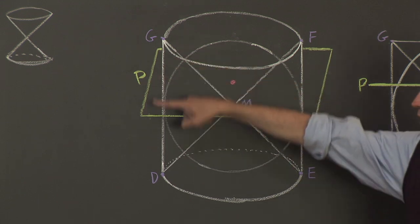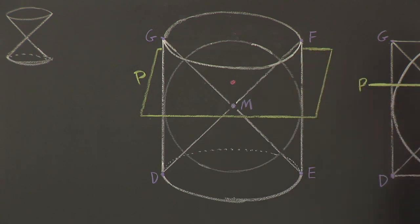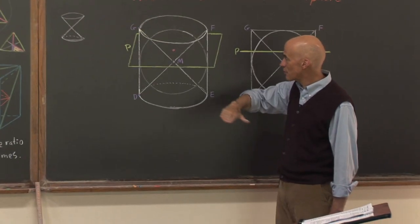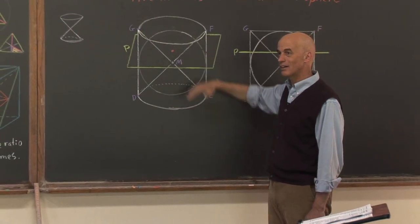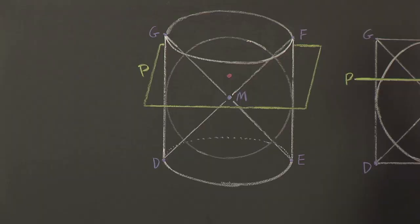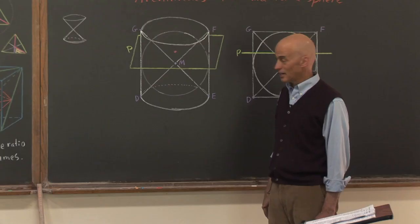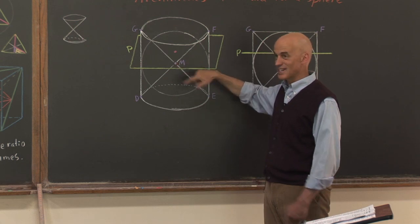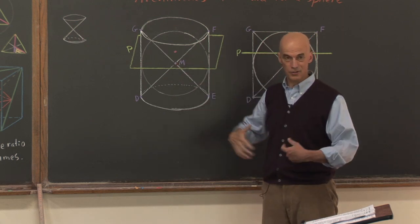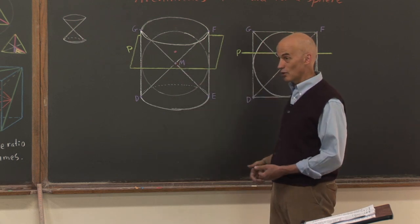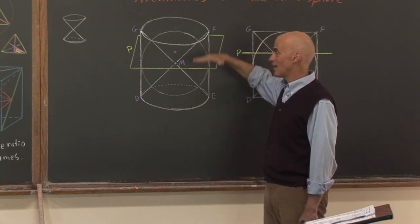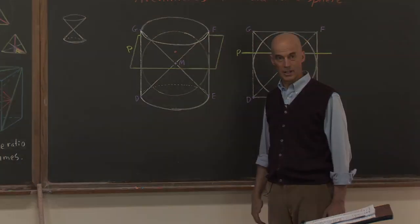Now, what about this green thing? What I've tried to draw here — and it's difficult — is a plane cutting through the cylinder parallel to the floor or the top of the cylinder. It's cutting through the cylinder, not directly through the middle. Point M is the exact center of the sphere and the center of the cylinder and the cone. But this plane is cutting through higher up than the middle of all of that.